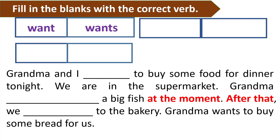Want. Wants. Grandma and I. To buy some food for dinner tonight. The correct answer is: Grandma and I want to buy some food for dinner tonight.